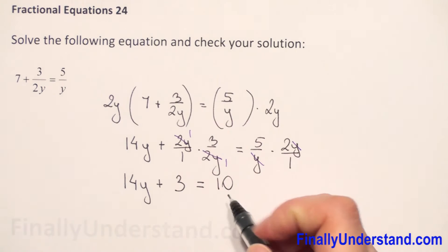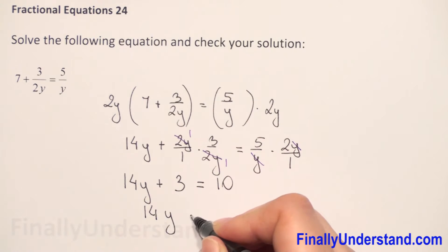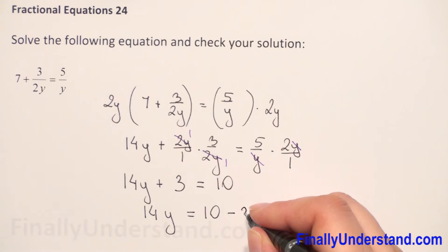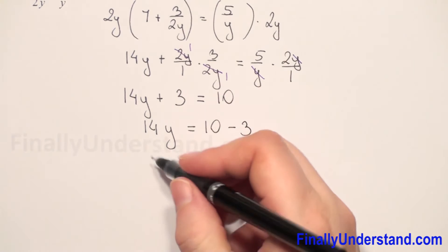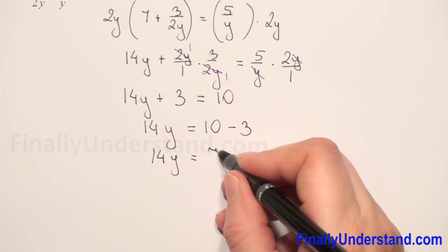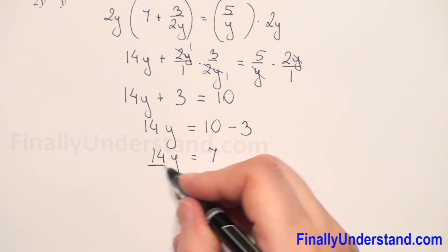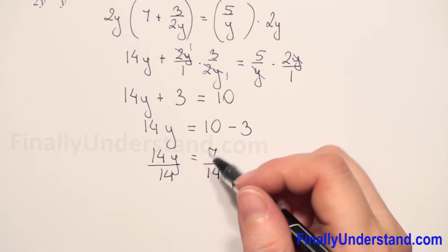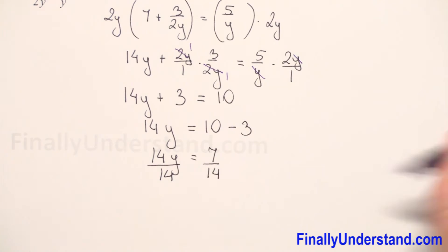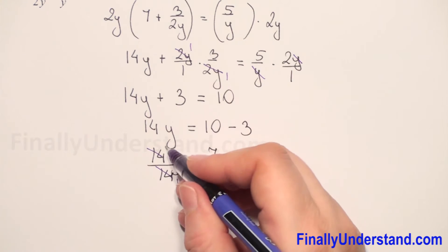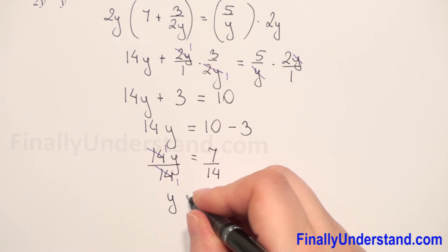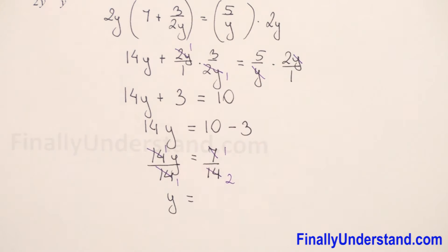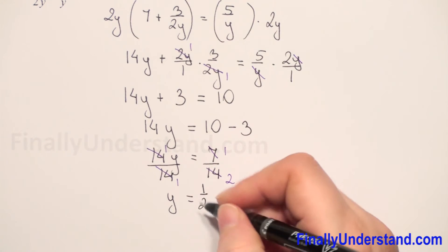Now I will move 3 to the right side, so 14y is rewritten. This is equal to 10, and on the right side we subtract 3, giving 14y equals 7. Now we divide both sides by 14 to find y. So 14 and 14 cancel out, and we have y equals 7 over 14, which reduces to y equals 1 over 2.